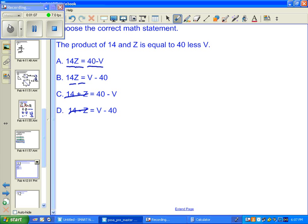And that's our answer. Correct response for number 11 is A. For the product of 14 and z is equal to 40 less v.